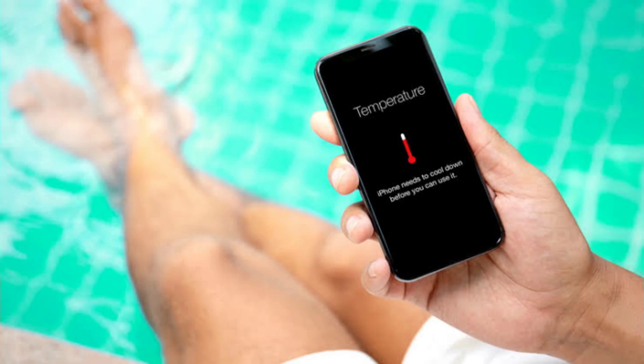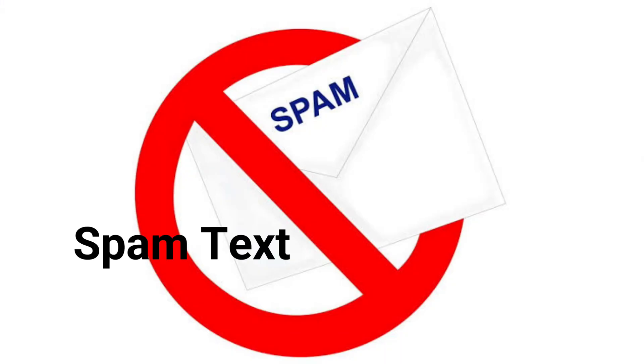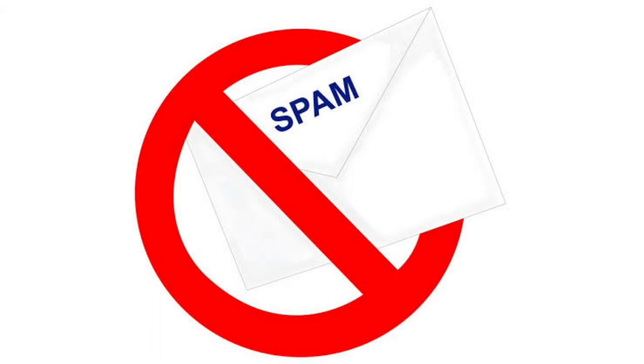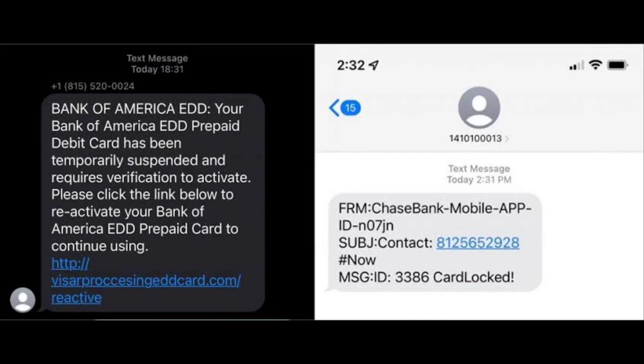Number 6 is Spam Texts. This is a common form of malware found on cell phones that will gather sensitive data and attempt to infect your contacts by sending texts with dangerous links and attachments.